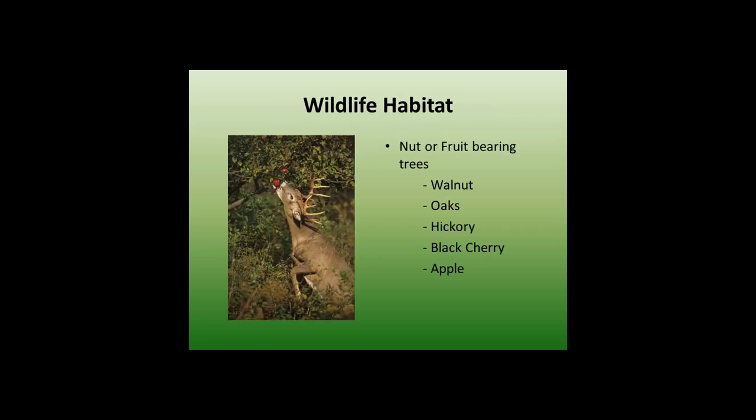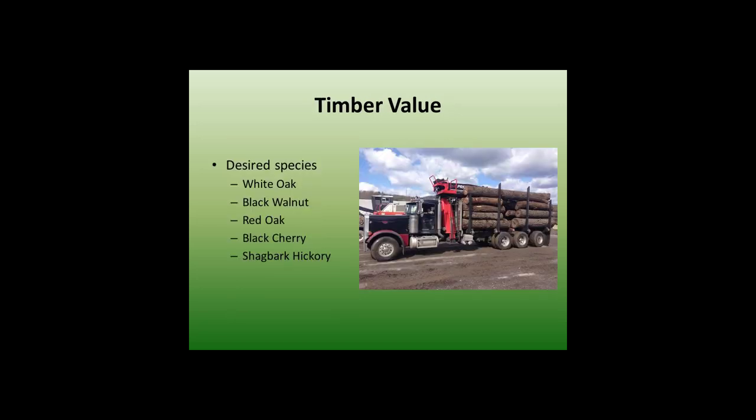If you're managing for wildlife habitat, you want nut or fruit bearing trees to provide forage for wildlife: walnuts, oaks, hickories, black cherry, and apple trees. If you're managing for timber value, the currently desired species are white oak, black walnut, red oak, black cherry, and shag bark hickory. Black walnut is the most sought-after timber tree right now, but that could change.